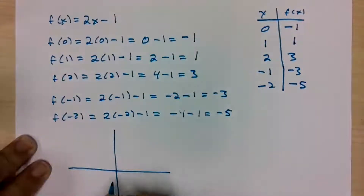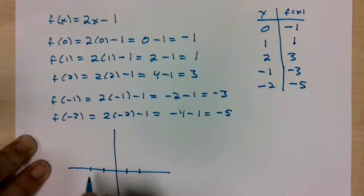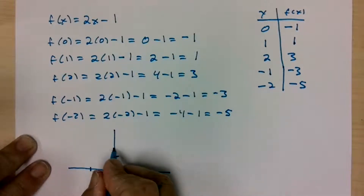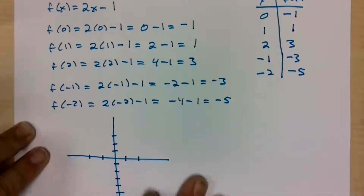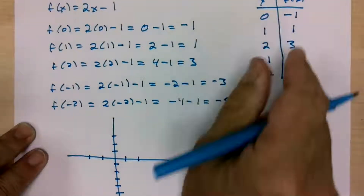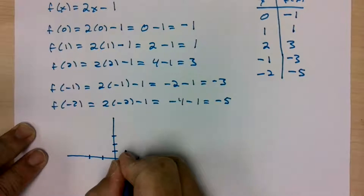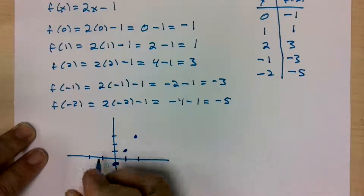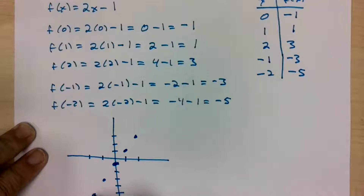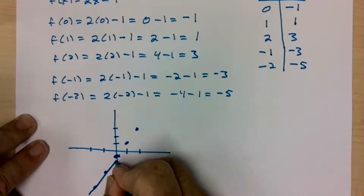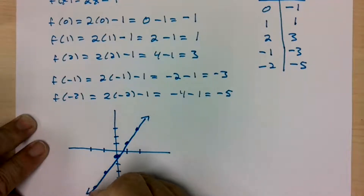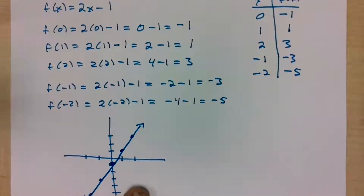So we can see what that looks like. On the x-axis we go from negative 2 to 2, and on the y-axis we need to go up to 3 and down to negative 5. We'll plot these points: x equals 0, y equals negative 1; x equals 1, y equals 1; x equals 2, y equals 3; x equals negative 1, y equals negative 3; x equals negative 2, y equals negative 5. You will notice these points all lie on a straight line. Connect them and draw arrows at each end. That's how we graph the function f of x equals 2x minus 1.